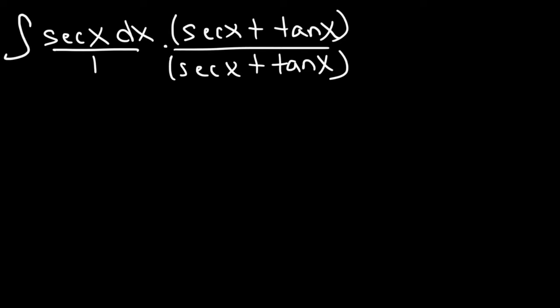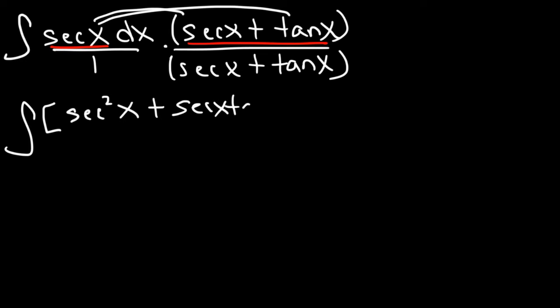Now, let's distribute secant to secant plus tangent. So in the numerator, we're going to have secant times secant, which is secant squared, and then secant times tangent. In the bottom, we're just going to have secant x plus tangent x.